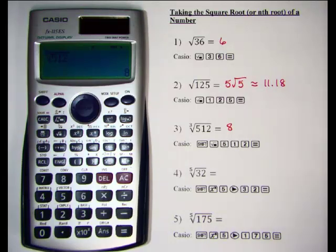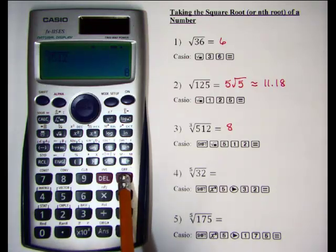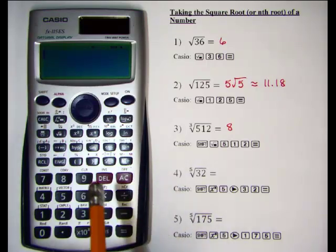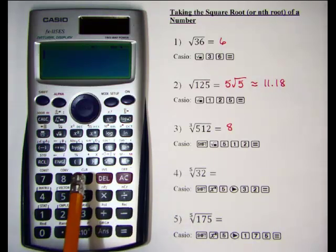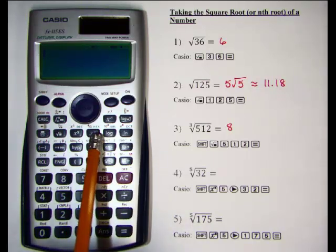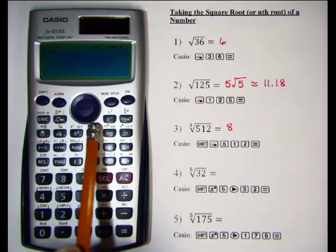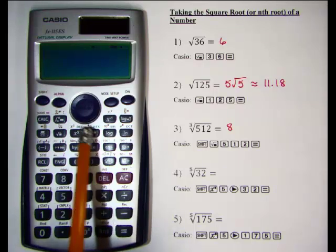Let's move to an even higher root — a fifth root. Clear the screen. Any root higher than 3 uses the nth root button, located above your power key. Since it's brown in color, we have to hit shift first, then our power key.